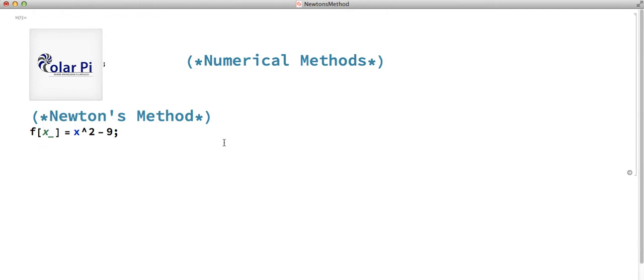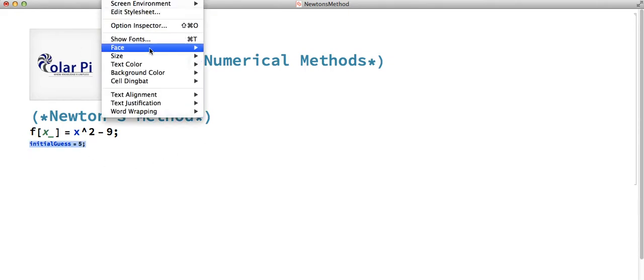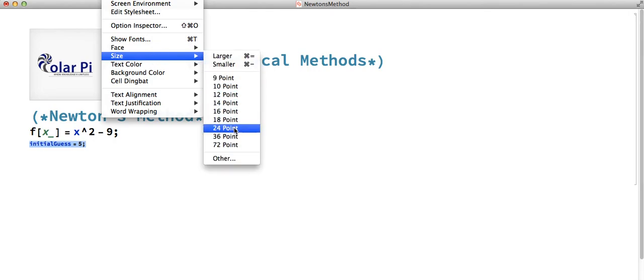So let's say that our initial guess is 5, that we think that the zero is 5.